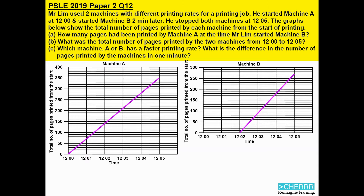Part A: How many pages had been printed by machine A at the time Mr. Lim started machine B? Part B: What was the total number of pages printed by the two machines from 12 to 12.05? Part C: Which machine, A or B, has a faster printing rate? What is the difference in the number of pages printed by the machines in one minute?